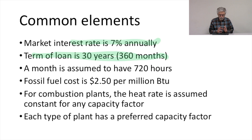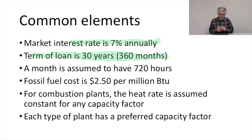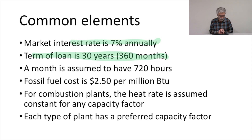For combustion plants, the heat rate is assumed to be constant for any capacity factor. We're going to run these plants in their ideal engineering range, so we expect the heat rate to be as low as possible for the range of operation we'll use. So we're going to assume a constant heat rate — it makes our examples much simpler.